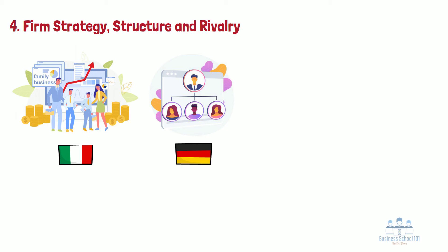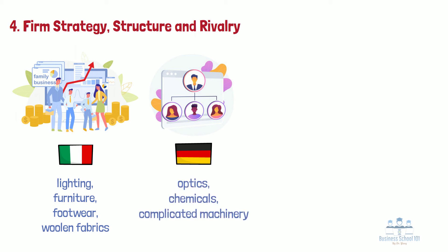In industries where Italian companies are world leaders — such as lighting, furniture, footwear, woolen fabrics, and packaging machines — a company strategy that emphasizes focus, customized products, niche marketing, rapid change, and breathtaking flexibility fits both the dynamics of the industry and the character of the Italian management system. In contrast, the German management system works well in technical or engineering-oriented industries such as optics, chemicals, and complicated machinery, where complex products demand precision manufacturing, a careful development process, after-sale service, and thus a highly disciplined management structure.